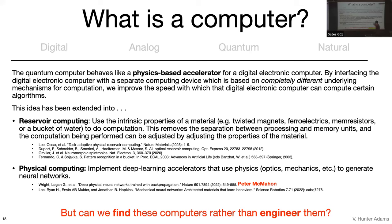There's also physical computing, particularly for accelerators for neural nets, where we may be able to implement some of the computation required for backpropagation through a neural net using other physics. Peter McMahon here at Cornell is working on stuff related to this and has some interesting papers about it. I'm going through all of this to provide context for a claim I would now like to make.